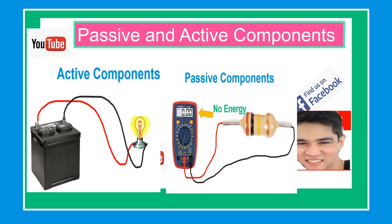Passive components are electronic components which consume energy in the form of voltage from the source but do not produce or supply energy, and cannot control the flow of electrons or electric current through a circuit — but they do limit the flow of electrons or electric current. Passive devices are the main components used in electronics, such as resistors, inductors, capacitors, and transformers, which together are required to build any electrical or electronic circuit.